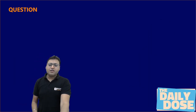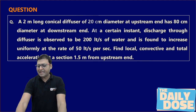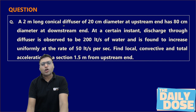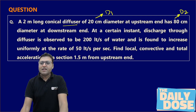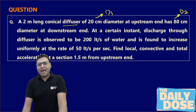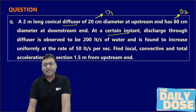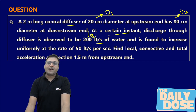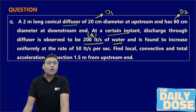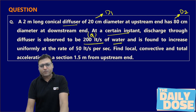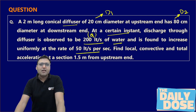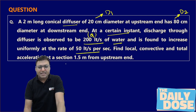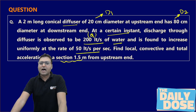The question is on your screen. There is a 2-meter long conical diffuser having a diameter of 20 centimeters at the upstream end and 80 centimeters at the downstream end. At a particular instant, the discharge through the diffuser is 200 liters per second of water and it is found to increase uniformly at the rate of 50 liters per second per second.